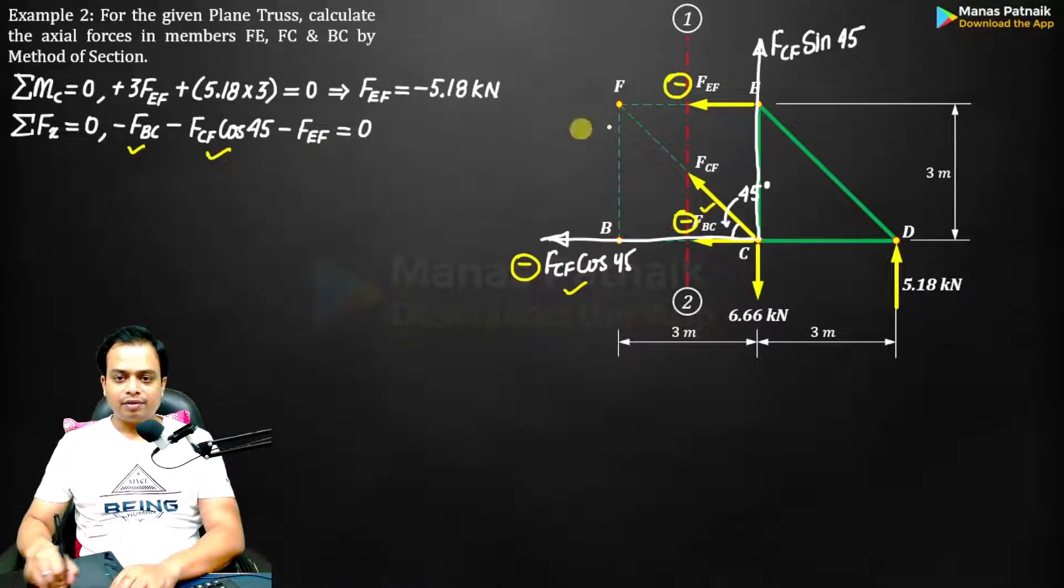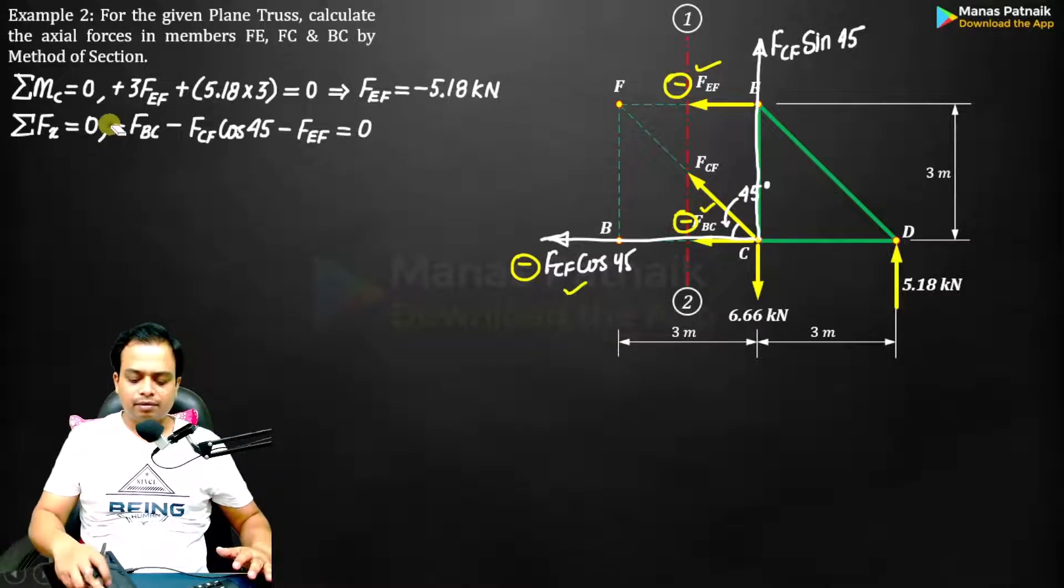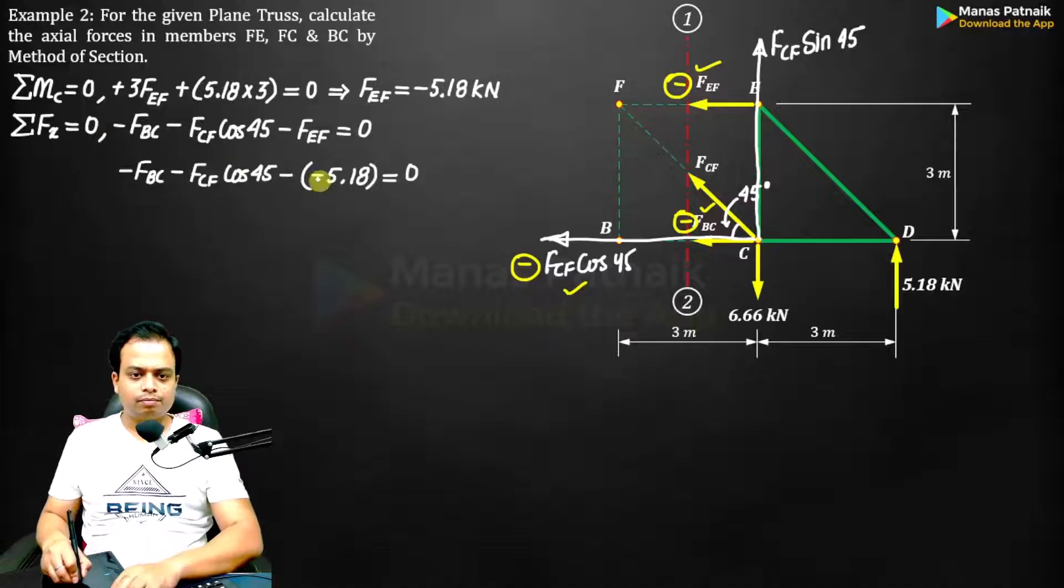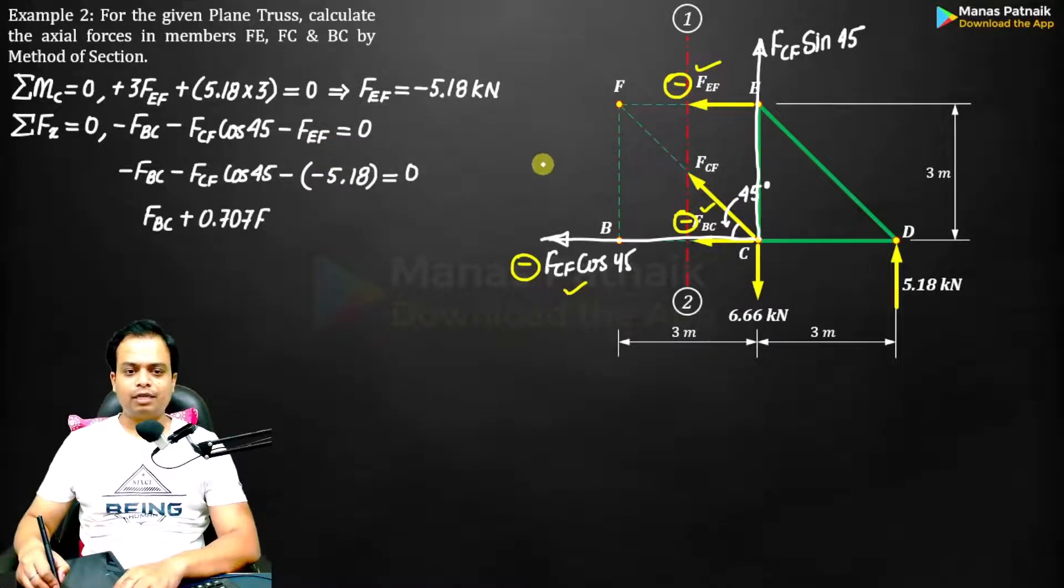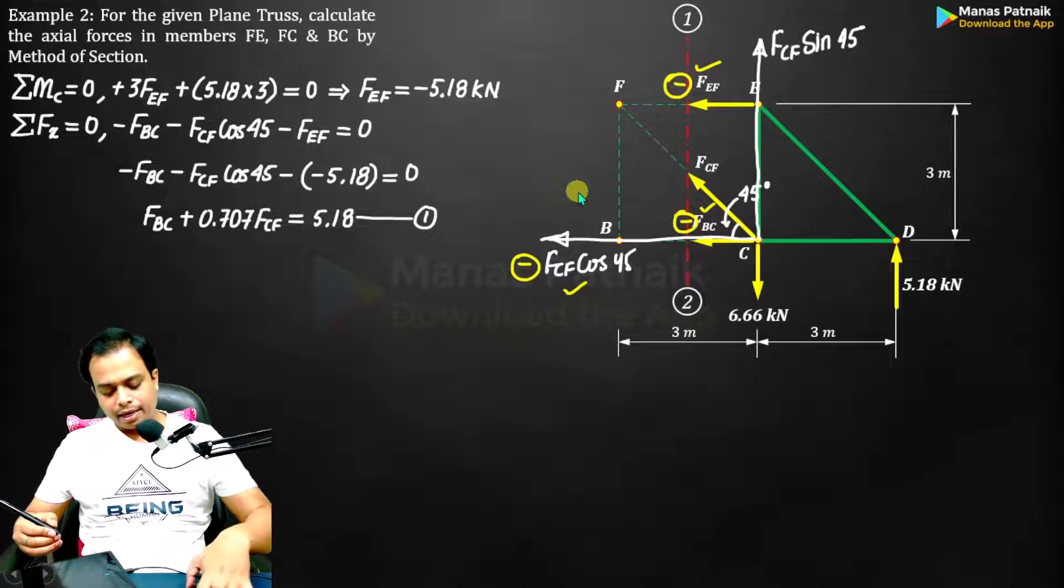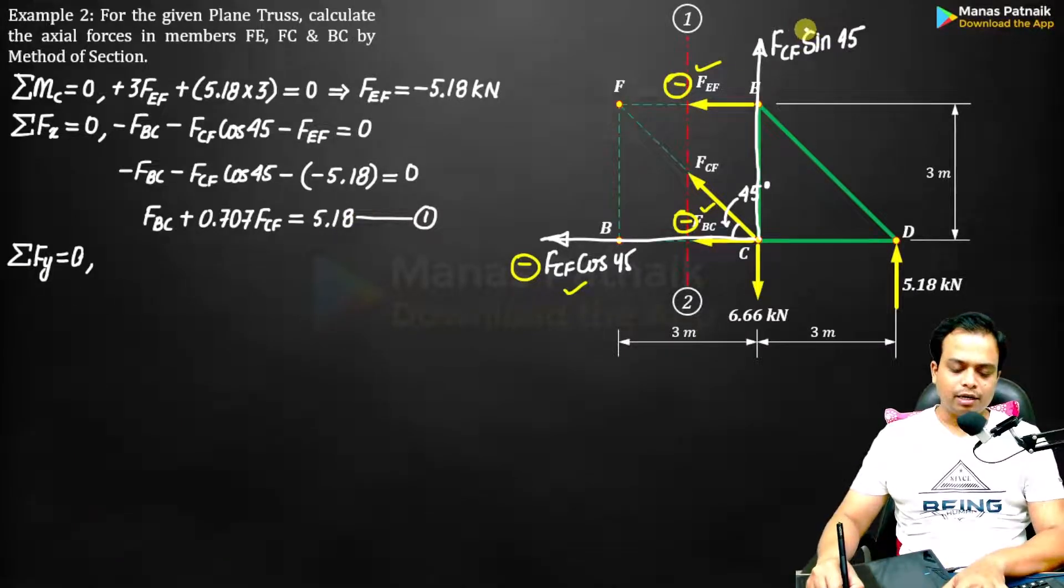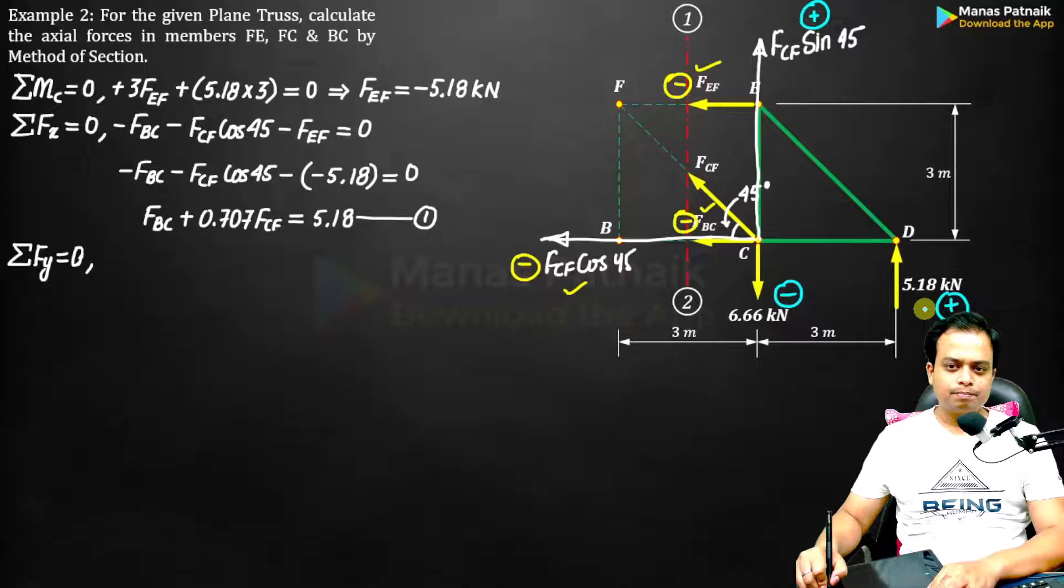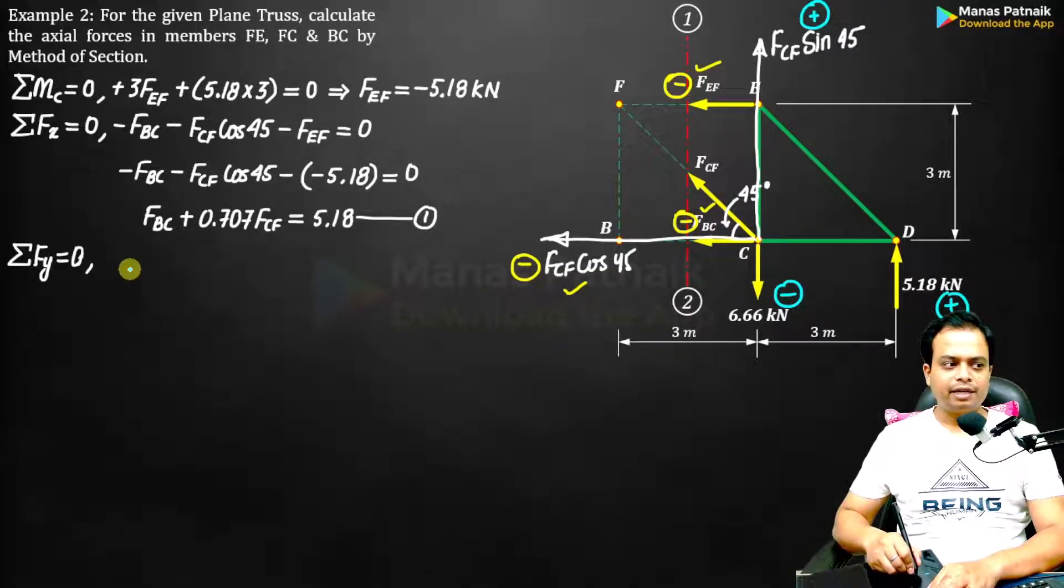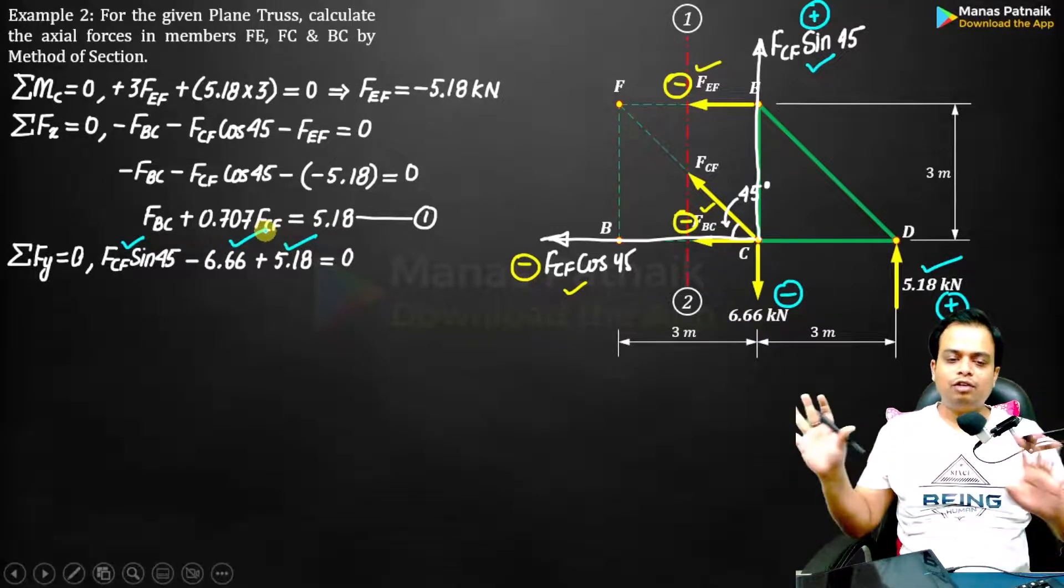Now if you watch, we have to deal with forces along the Y direction. This over here: positive, negative, positive. Let me write it down: FCF sin 45, plus 5.18, minus 6.66. All the forces have been taken into account. You can clearly see in this equation there is only one unknown, that is FCF. Just solve it.